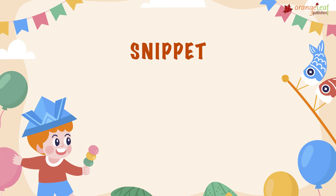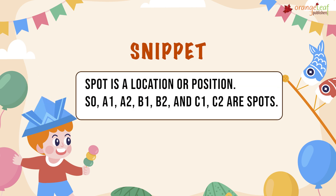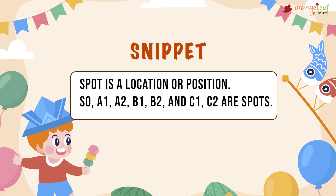Snippet: A spot is a location or a position. So A1, A2, B1, B2, C1, and C2 are all spots.